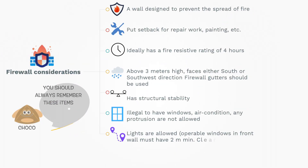Here are the things you need to keep in mind when designing a firewall. A firewall is designed to resist the damages caused by fire and protect the building's occupants. Putting a setback is ideal for repair work, painting, and maintenance. 0.60 meters will be sufficient for this.